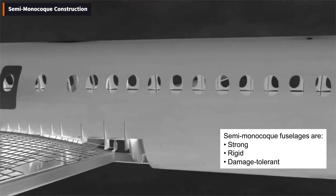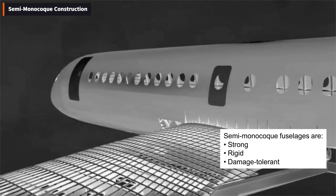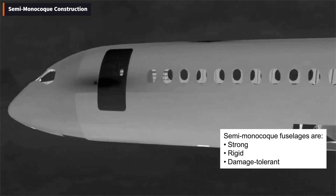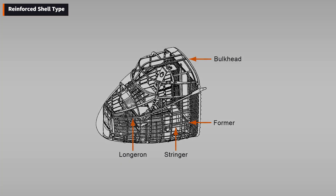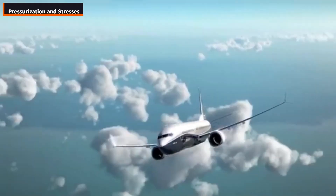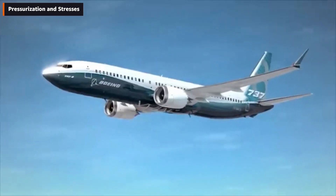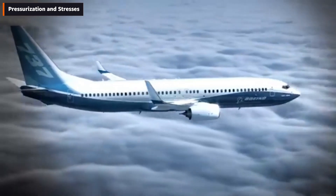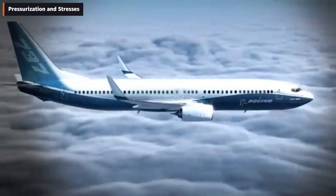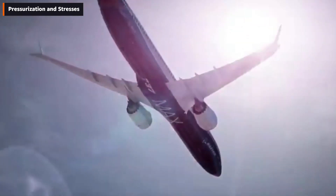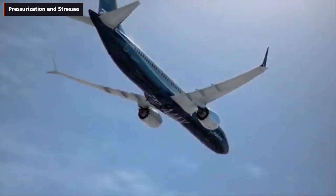Semi-monocoque fuselages are strong, rigid, and damage tolerant — even with some localized damage the structure can remain safe and airworthy, which is one reason nearly all modern aircraft use this design. Another variation is the reinforced shell fuselage, which combines a complete internal framework with a strong outer skin. Modern transport aircraft are pressurized, meaning the fuselage must withstand repeated pressure cycles between the cabin and outside atmosphere, putting stress on the skin and joints and leading to metal fatigue over time.